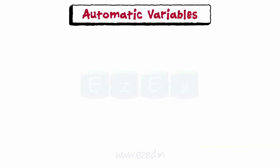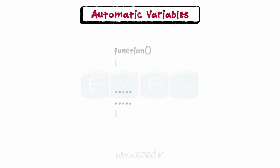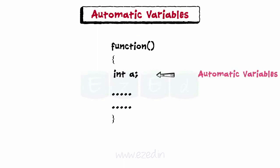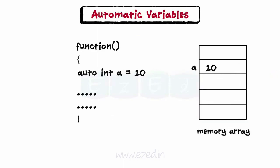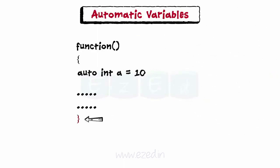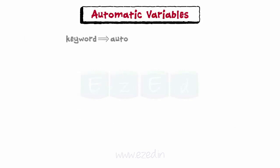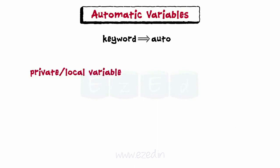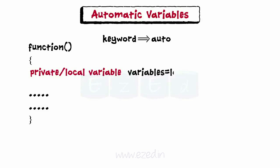Let's learn automatic variables. All the variables declared within the body of a function are automatic variables. They are created when the function is called and destroyed when it is exited — hence they are given the name automatic. They are declared with the keyword auto and are private or local to the function where they are declared. Thus automatic variables are also referred to as local or internal variables.